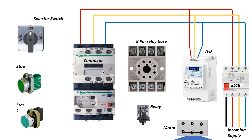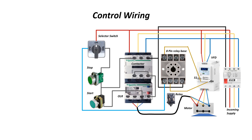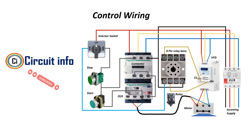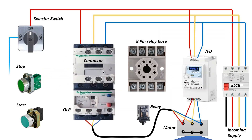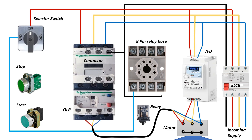So why use both, and how does the changeover switch help? In some systems we install both a VFD and a DOL starter with a changeover switch. This gives flexibility — use VFD mode for energy saving and soft starts, and switch to DOL mode when you need full speed operation or in case the VFD fails. In this diagram you can see how the changeover switch directs the power either through the VFD or directly to the motor via the DOL circuit.